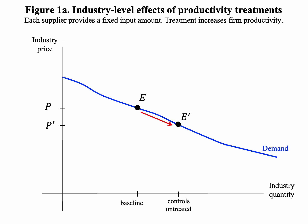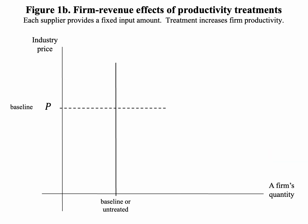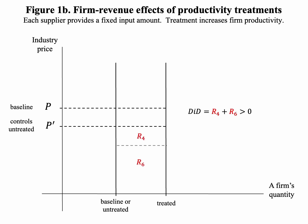Looking at the targeted treatment, the industry quantity goes up and the price falls. Treating the entire market will of course change quantity and price even more. Now let's view these same two experiments at the firm level. Firm quantity is on the horizontal axis. Revenue in this picture is an area. To simplify the picture, we assume that the treated and the controls have the same output and revenue in the baseline. The treated are more productive. For a revenue outcome, the treatment effect estimated as the difference between treated and controls' revenue is the area R4 plus R6.